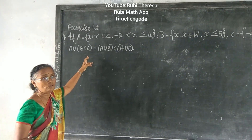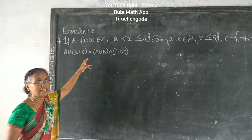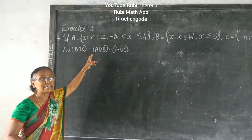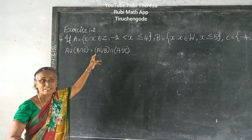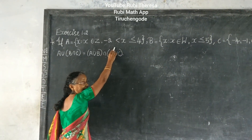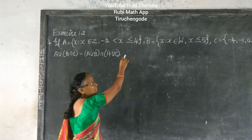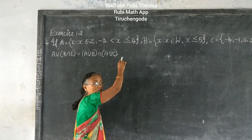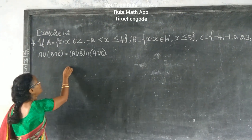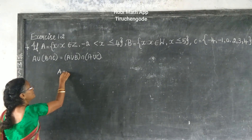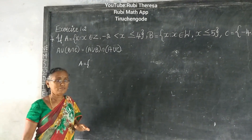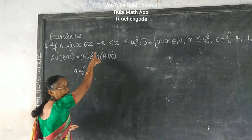Set A is equal to x such that x is an element of Z. Z means integers. X is greater than minus 2 and less than or equal to 4. This is in set builder form. I told you, if it is in set builder form, it is better to convert this into roster form, where elements are listed out. So better to list out the elements — these are integers.